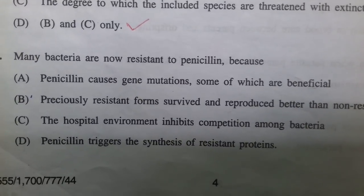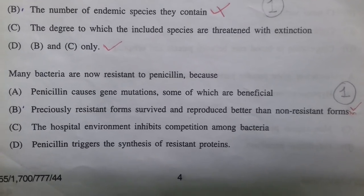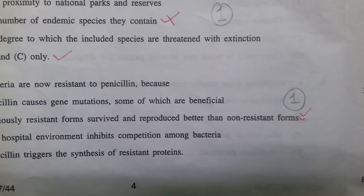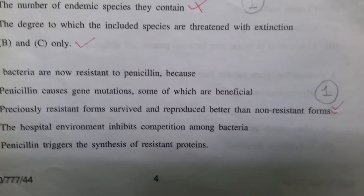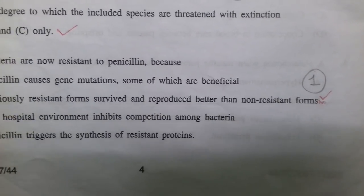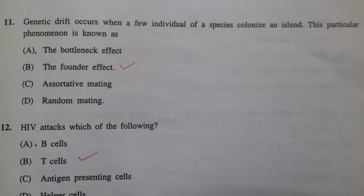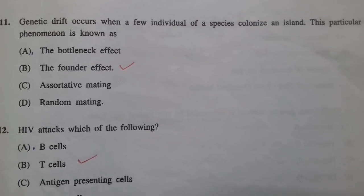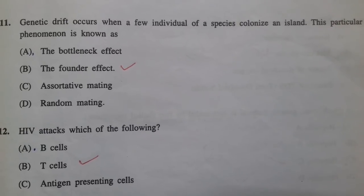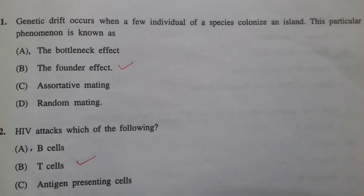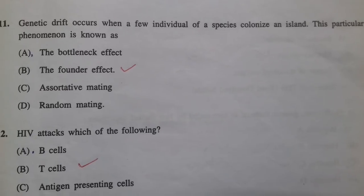Many bacteria are now resistant to penicillin because the precisely resistant forms survived and reproduced better than non-resistant forms — I mistakenly corrected my answer in the exam. Question eleven: the correct answer is the founder effect, not the bottleneck effect. Genetic drift that occurs when a few individuals of a species colonize an island is known as the founder effect.